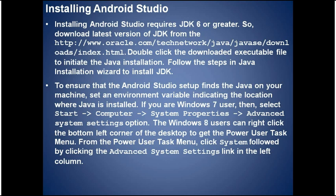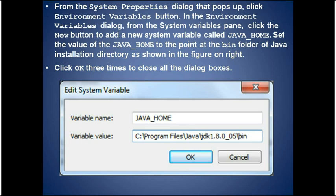For Windows 7 users: right-click the Computer icon on the desktop and select Properties, then click the Advanced System Settings link in the left column. For Windows 8 users: right-click the bottom-left corner of the desktop to get the power user task menu, then click System, followed by the Advanced System Settings link. From the System Properties dialog, click Environment Variables. In the System Variables pane, click New to add a variable called JAVA_HOME (all caps) and set its value to point at the bin folder of the Java installation directory. Then close all dialogs by clicking OK three times.